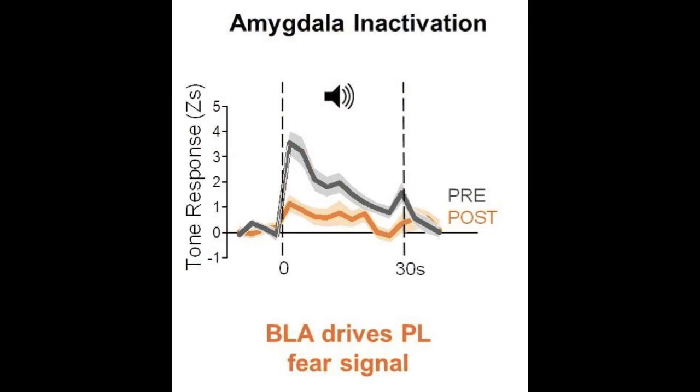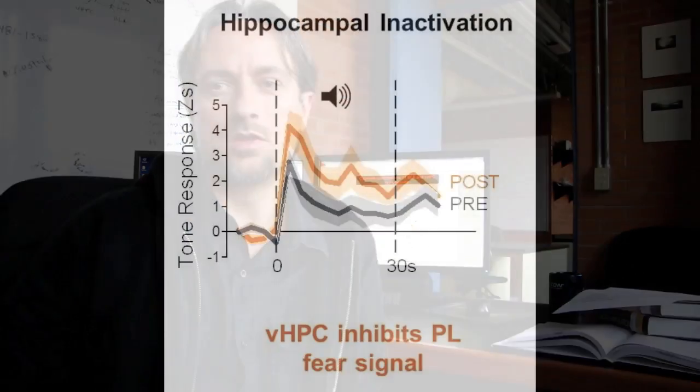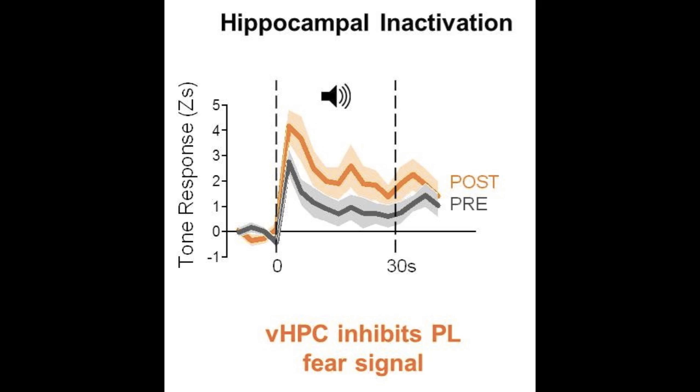As you can see here, responses of prelimbic neurons to tones that have been conditioned. You can see that the inactivation of the basolateral amygdala dramatically reduced the activity, the response to the tone of those neurons. Whereas inactivation of the ventral hippocampus actually increased the response of these neurons to the tone.